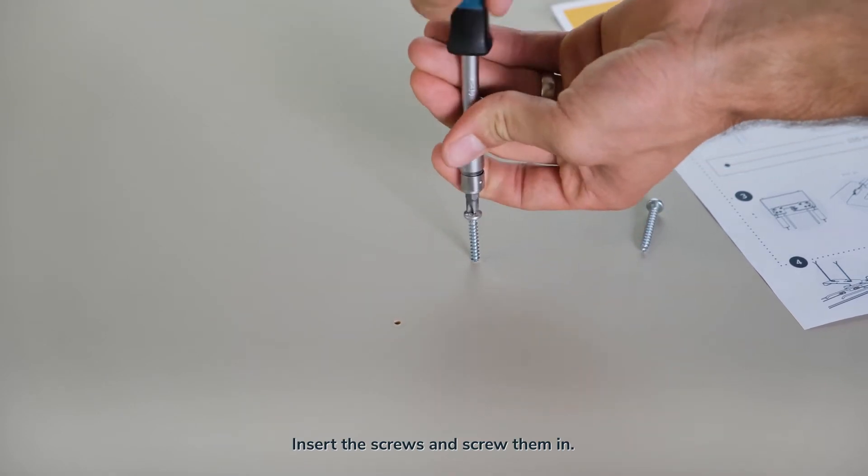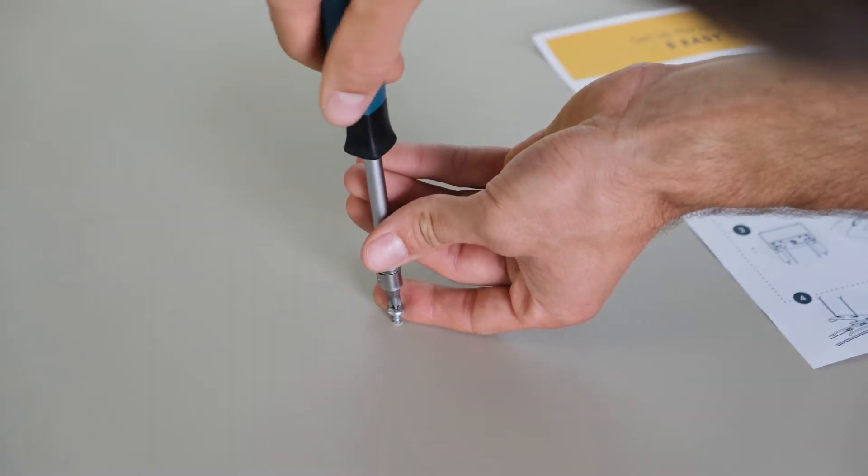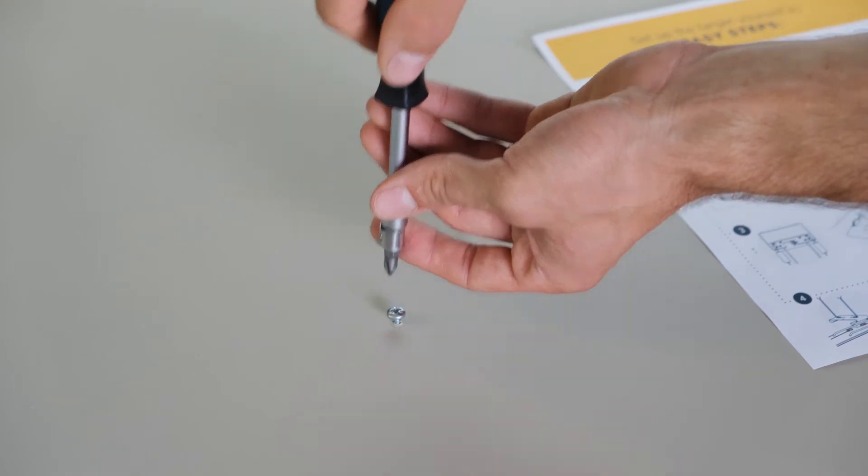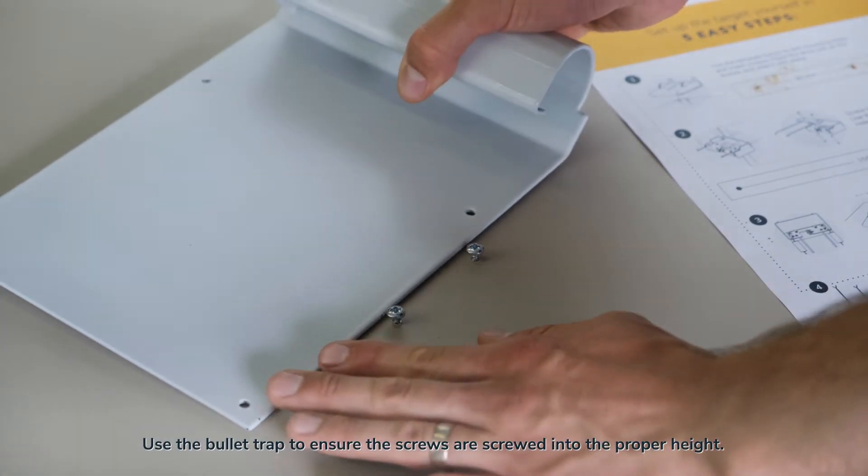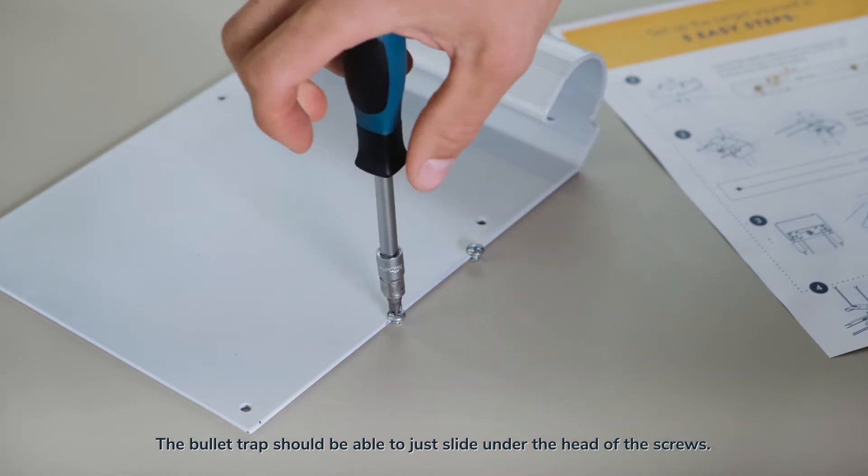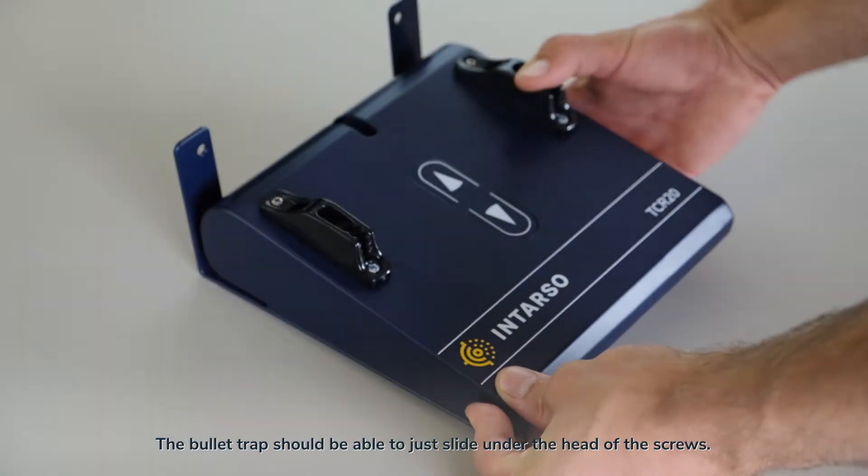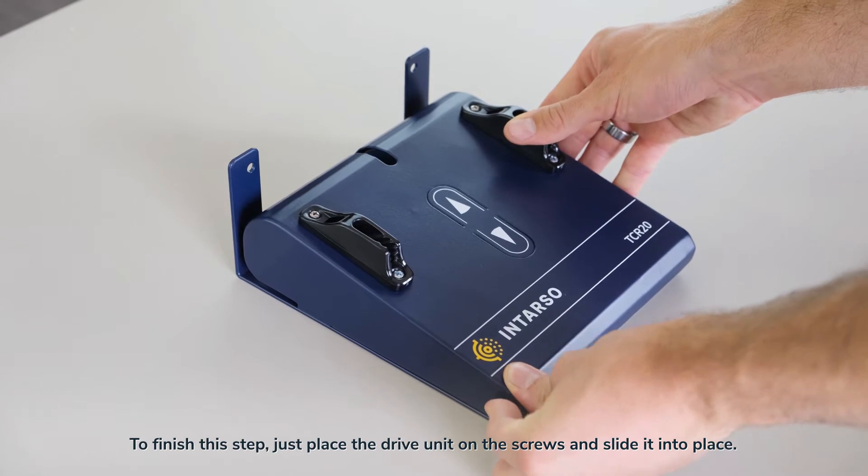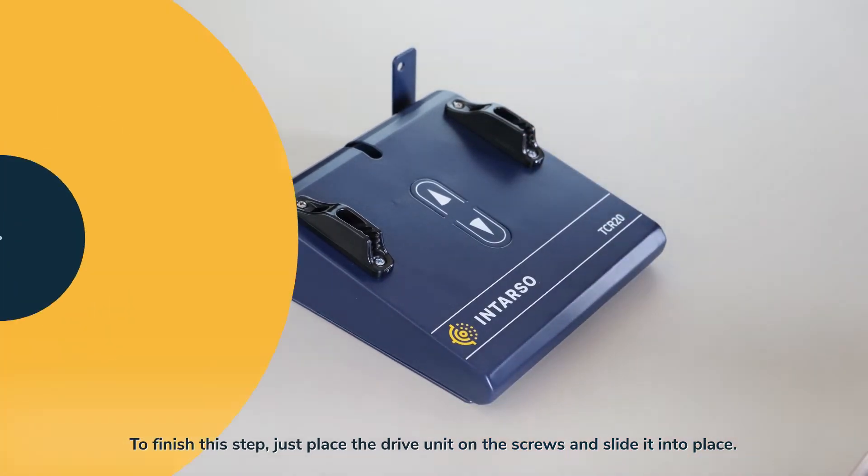Insert the screws and screw them in. Use the bullet trap to ensure the screws are screwed in to the proper height. The bullet trap should be able to just slide under the head of the screws. To finish this step, just place the drive unit on the screws and slide it into place.